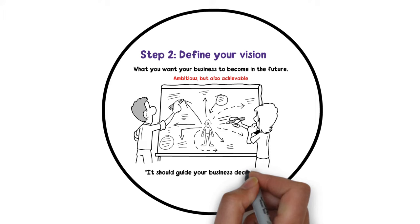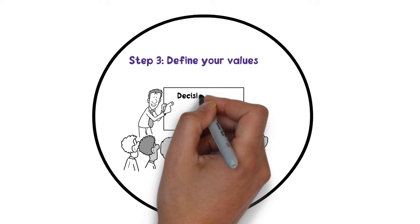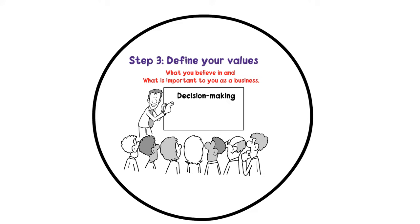Step 3: Define your values. Your values are the guiding principles that shape your business culture and decision making. They should be a reflection of what you believe in and what is important to you as a business. Your values should be authentic and genuine, and they should be lived out in everything you do.